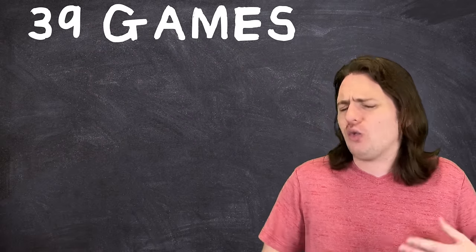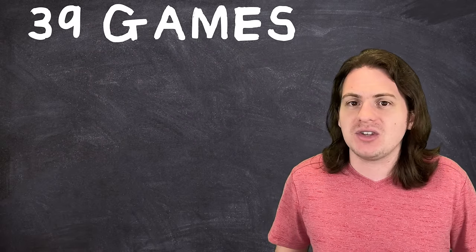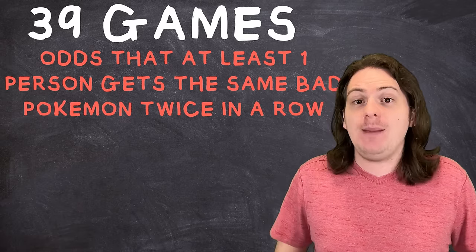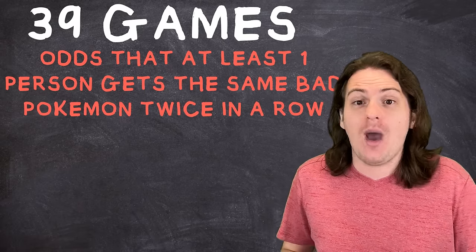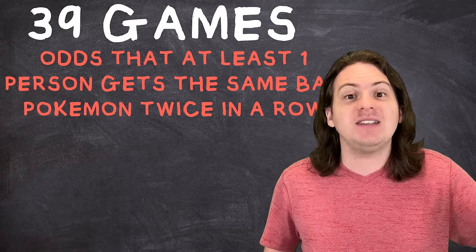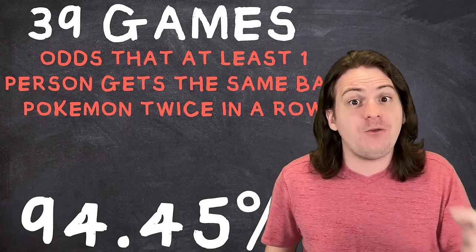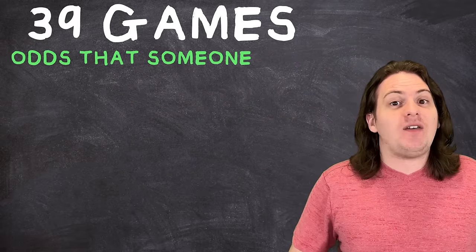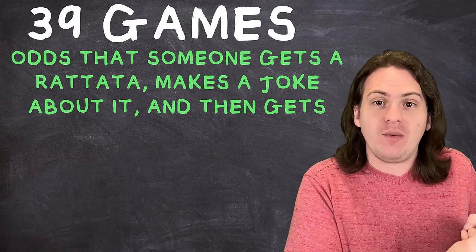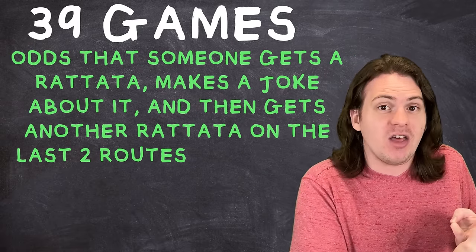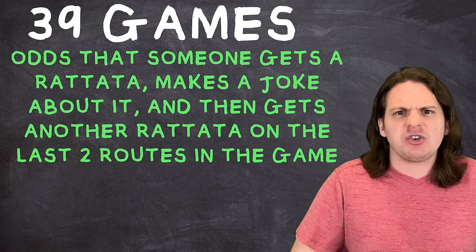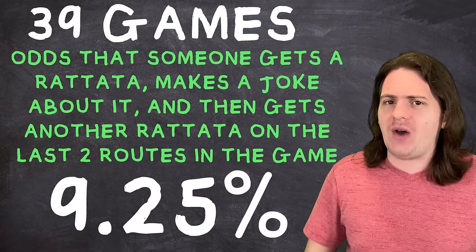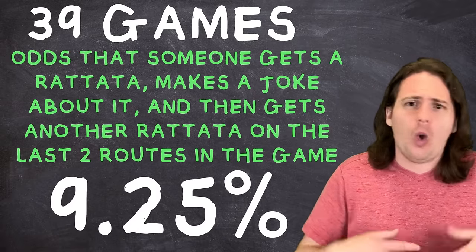Assuming that each game has roughly the same number of encounters, the odds of at least one of us getting the same crappy Pokemon twice in a row at any point throughout the game is a whopping 94.455%. The odds of at least one of us getting a Rattata, making a joke about quitting if we get another one, and then getting another one on the last two encounters specifically is 9.25%, around 1 in 11.